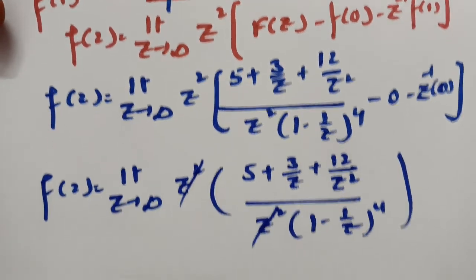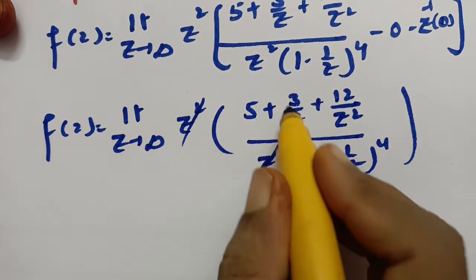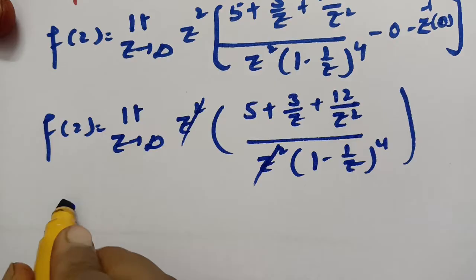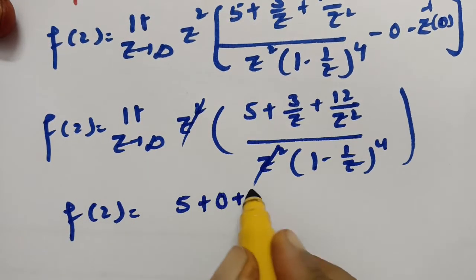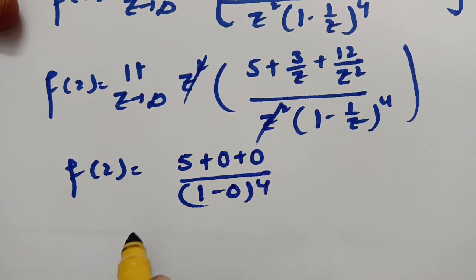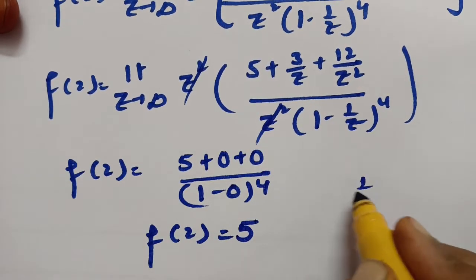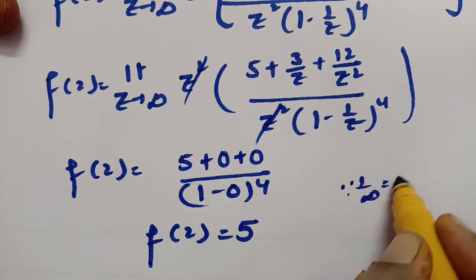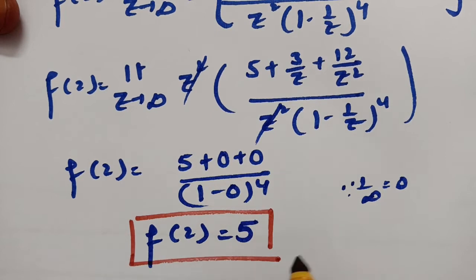Cancelling z² and substituting z = ∞: 3/z → 0, 12/z² → 0, and 1/z⁴ → 0, so the expression becomes 5 / (1 − 0) = 5. Therefore f(2) = 5.